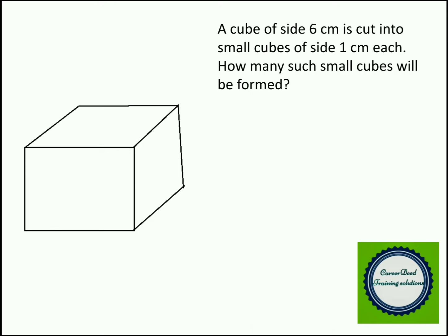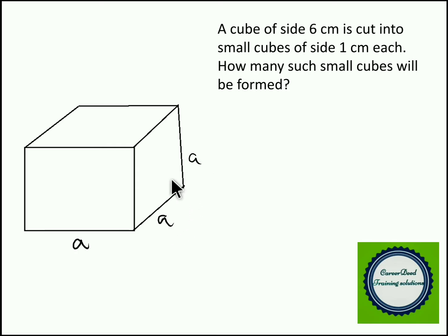Here we are going to speak only about the cube. In a cube all the sides are equal. A cube totally has 6 faces and all the sides are equal. You can take the side as A — so length is A, breadth is A and height is A. Length, breadth and height are all equal. So the volume of this cube is A³ — length into breadth into height — which gives A³ as the volume.